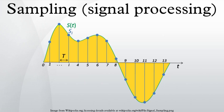Sampling rates higher than about 50 to 60 kHz cannot supply more usable information for human listeners. Early professional audio equipment manufacturers chose sampling rates in the region of 50 kHz for this reason. There has been an industry trend toward sampling rates well beyond the basic requirements, such as 96 kHz and even 192 kHz. This is in contrast with laboratory experiments, which have failed to show that ultrasonic frequencies are audible to human observers.